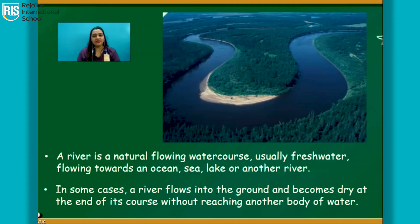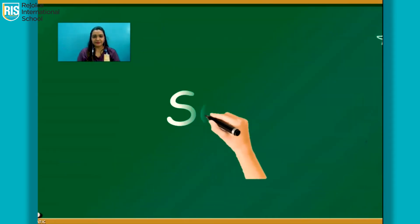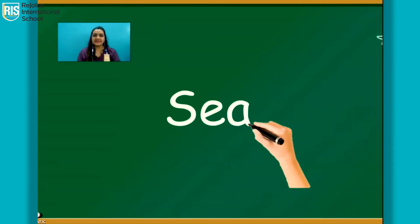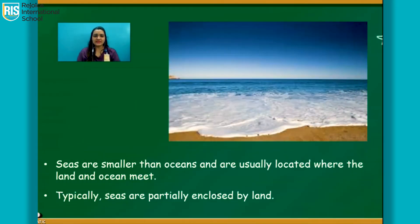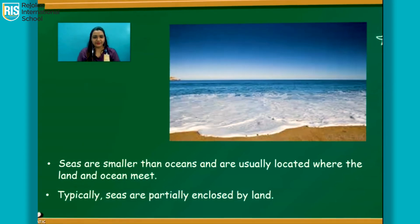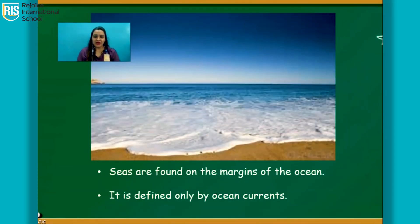Sea. Seas are smaller than oceans and are usually located where the land and the ocean meet. Typically, seas are partially enclosed by land. Seas are found on the margins of the ocean and are defined by ocean currents.